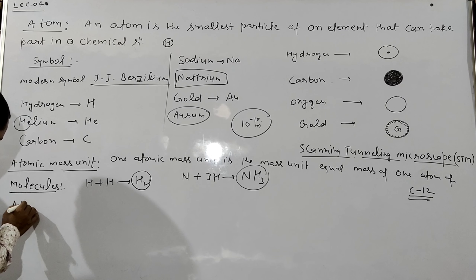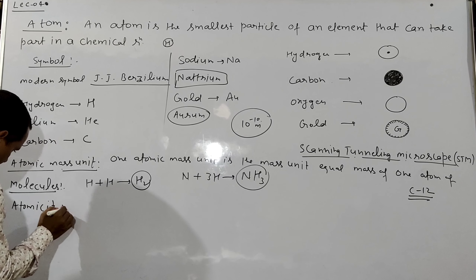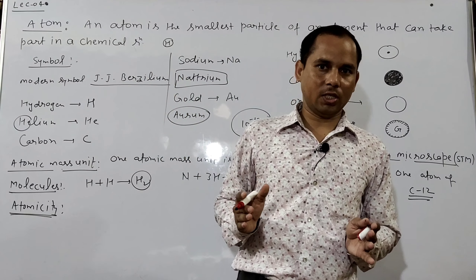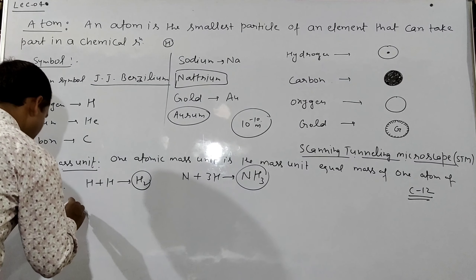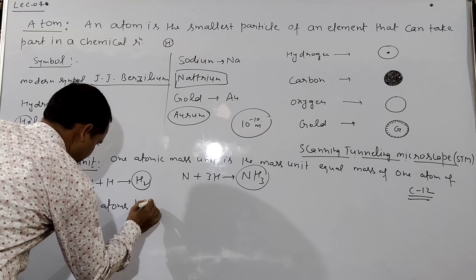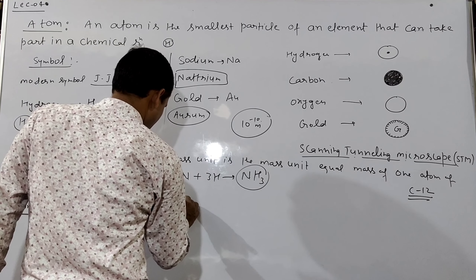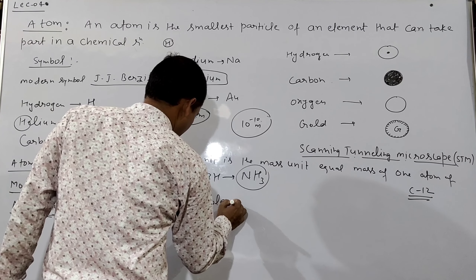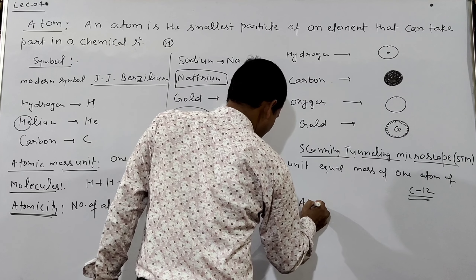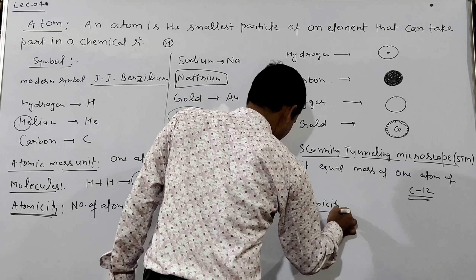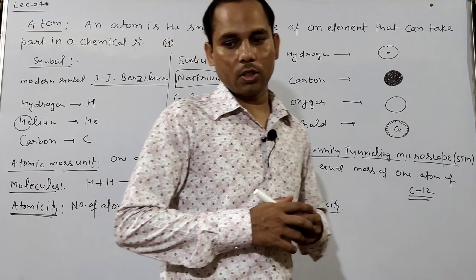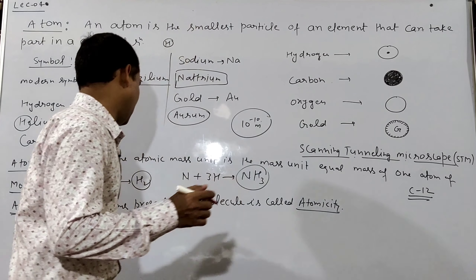There is a term called atomicity. Atomicity is sometimes asked in exams. Atomicity is defined as: the number of atoms present in a molecule is called atomicity. You can note this definition — number of atoms present in a molecule is called atomicity.